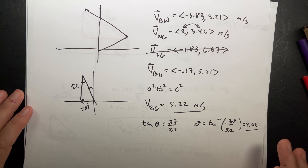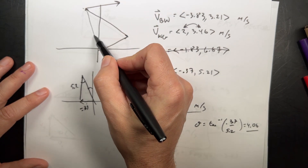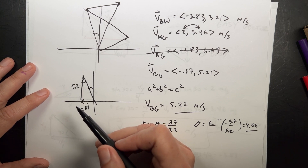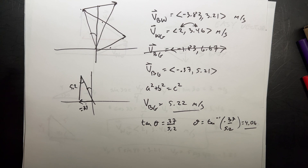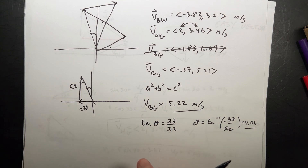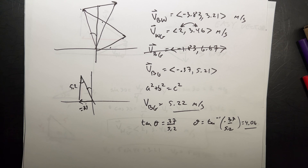Why is the component method better? If you have three vectors to add using the law of sines and cosines, you have to apply it twice. With vector components, you just find each component, add all the x's together, add all the y's together — same process regardless of how many vectors. And in three dimensions, the law of sines and cosines gets very complicated, but vector components do not. I've never used the law of sines and cosines for vector addition in physics — components are always the way to go.